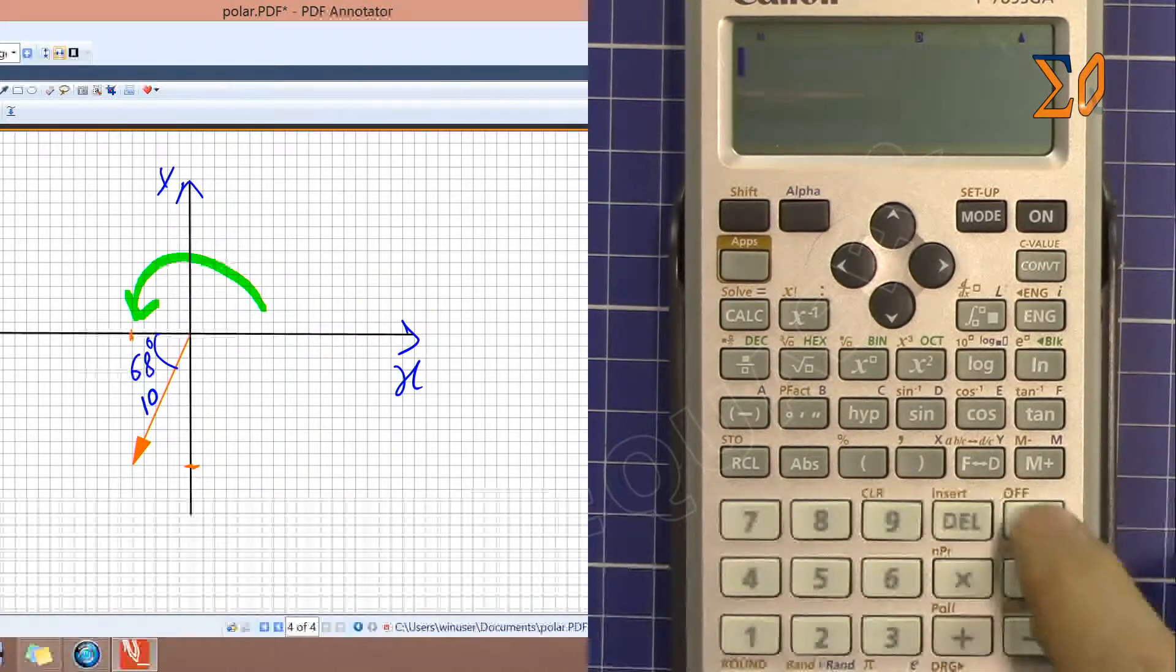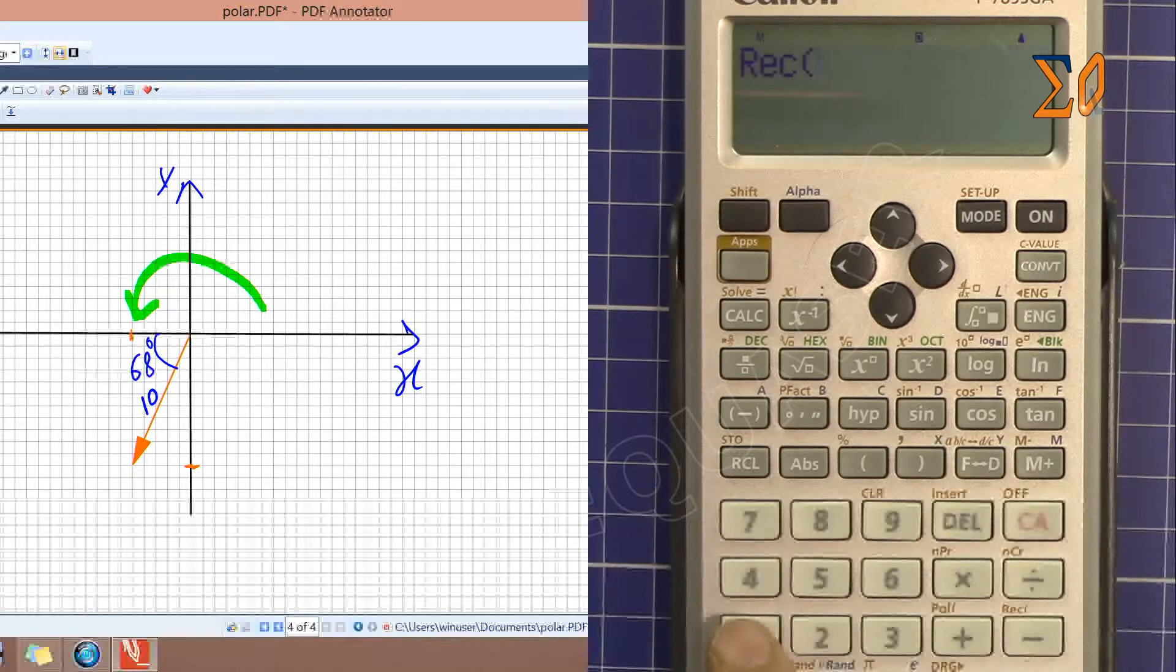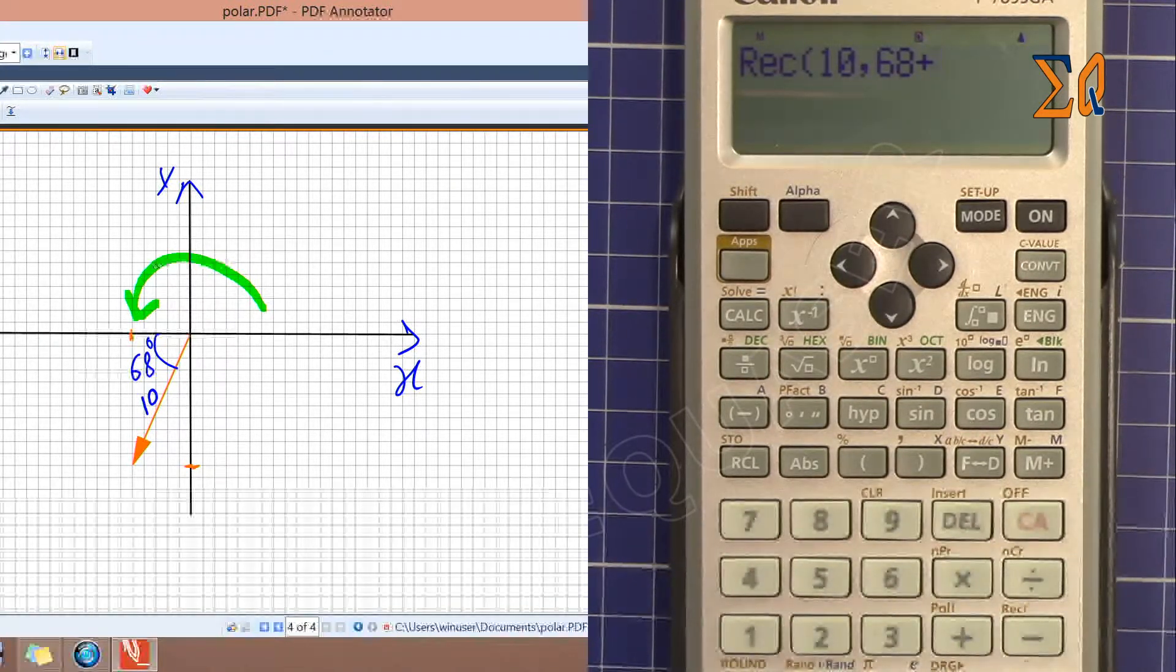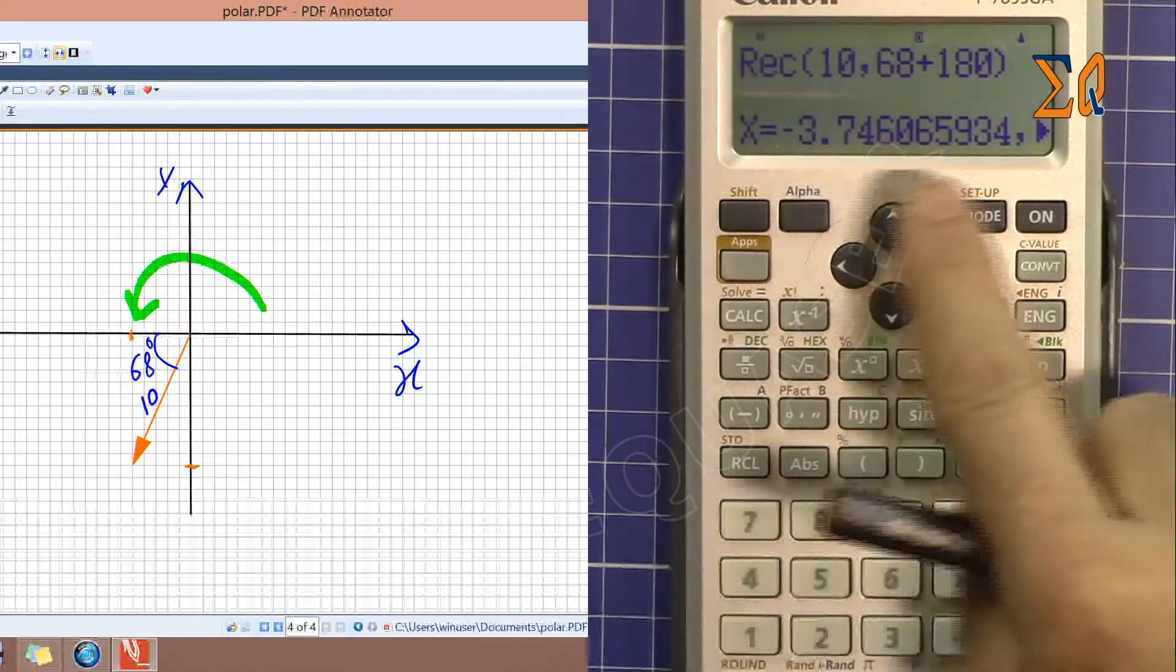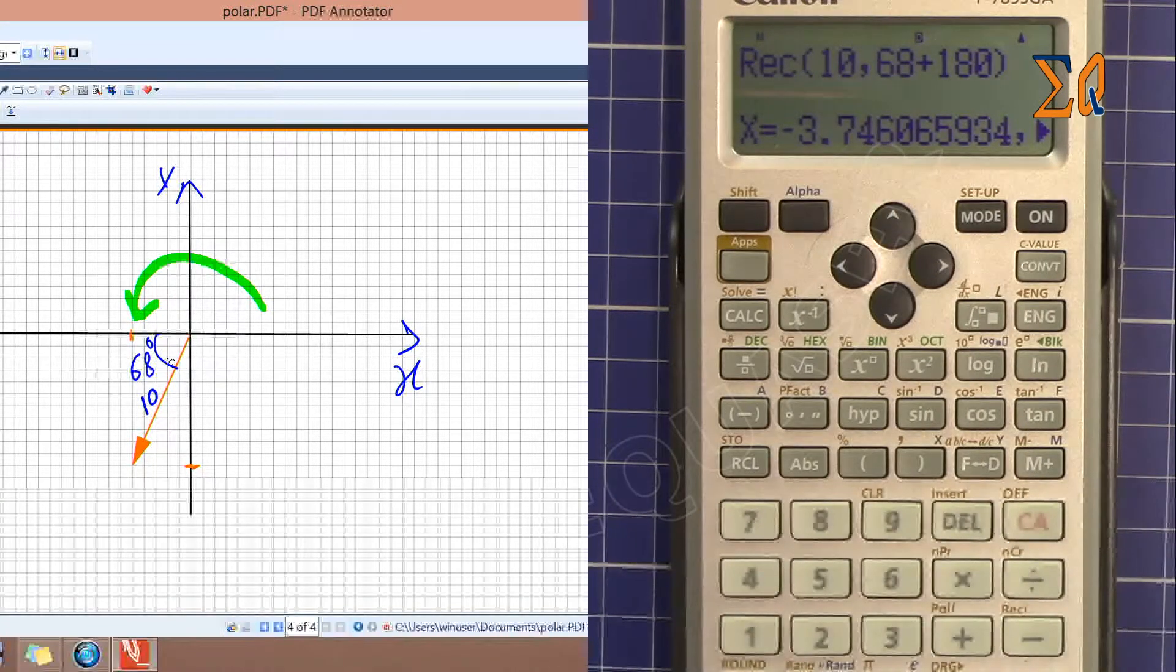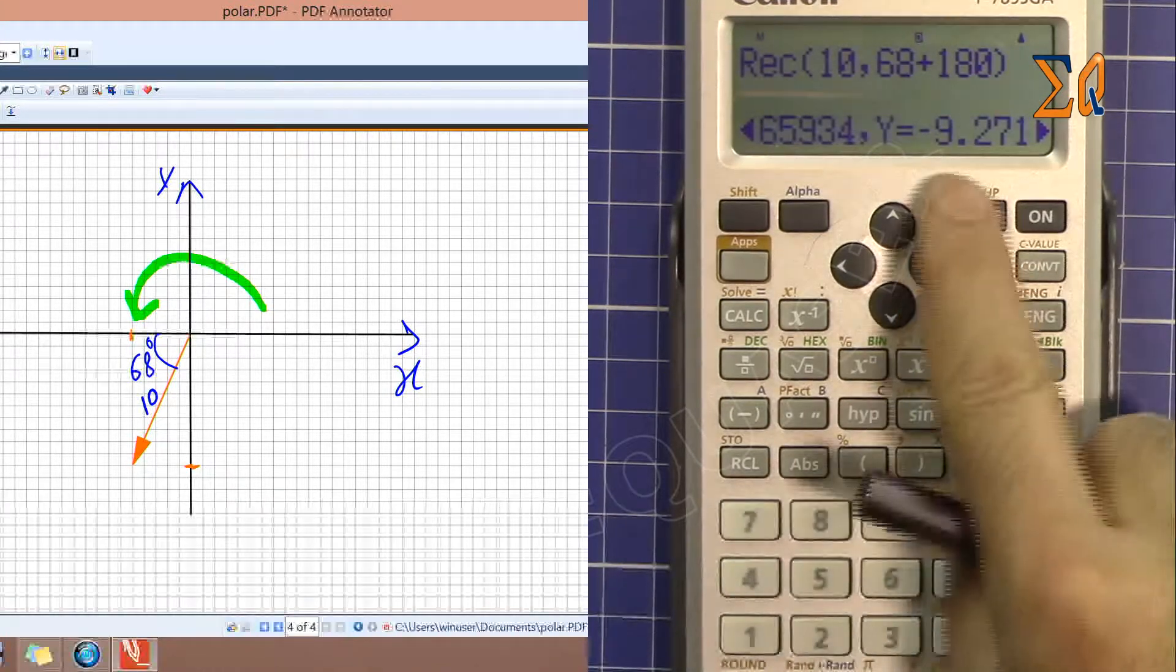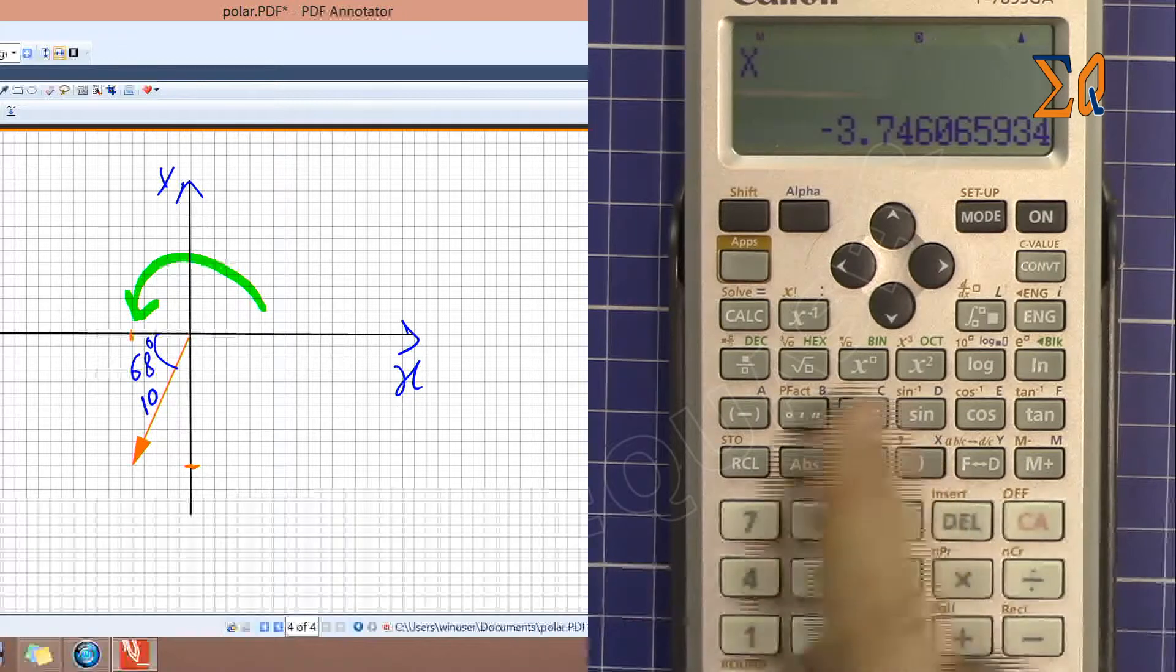Now let's do this one. Shift rectangle because we want a rectangle. Now we have 68 degrees so we have to consider that one. So the magnitude is 10, so we enter our first 10, shift comma, and then 68 plus, we have to know that from here to here is 180 degrees, so 180. Now it shows that x is minus 3.7 which is correct, and y also should be minus and below minus 9. To see it clearly and easily just press recall x and recall y.